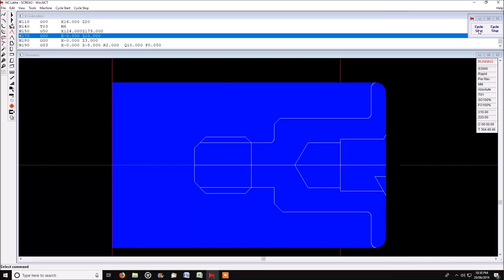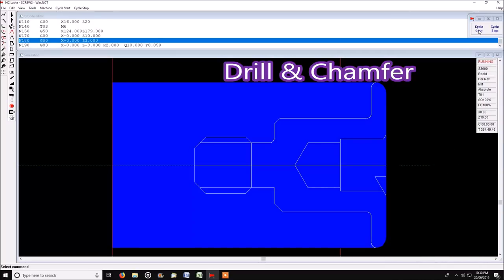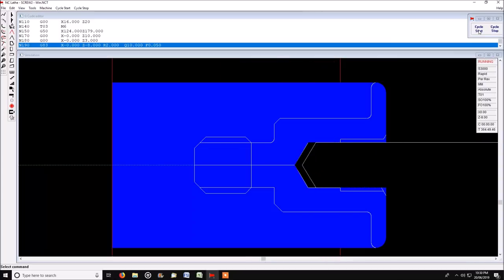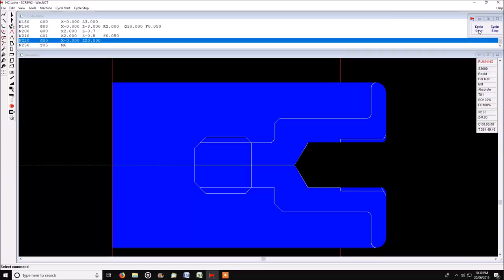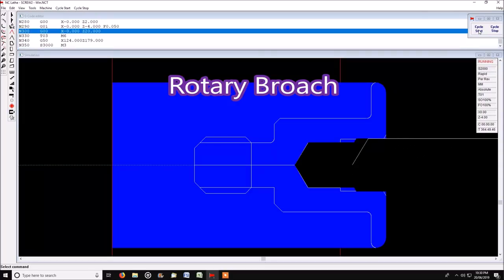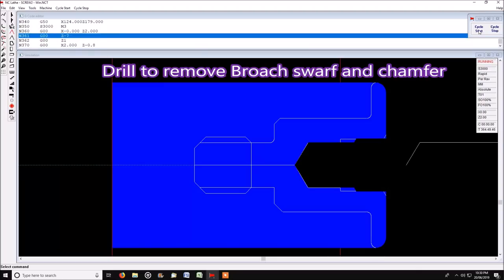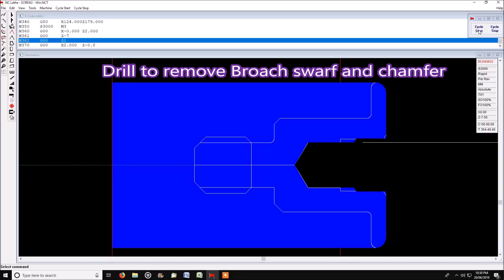This is a simulation of the second operation. We drill and then chamfer using the drill. That chamfer is required by the broach to give it a lead-in to get started. Unfortunately, I don't have a simulated part that's flat on the end like an end mill.